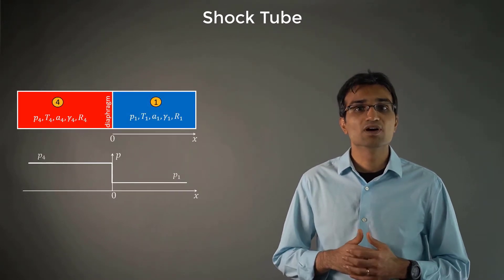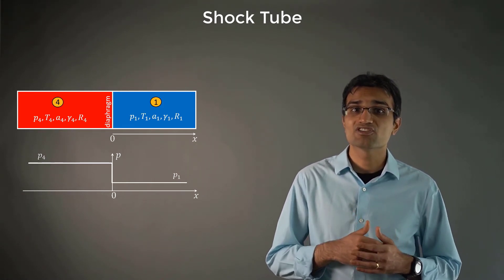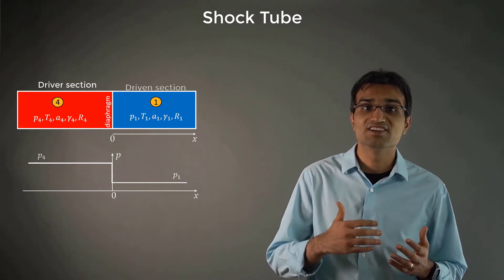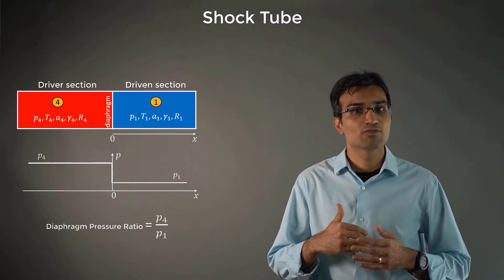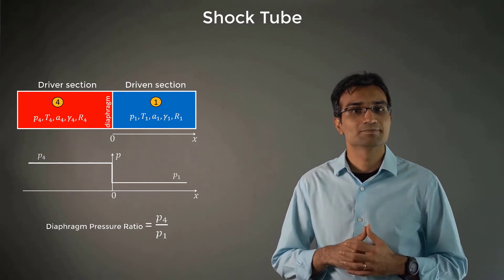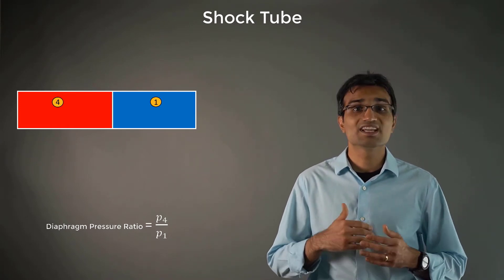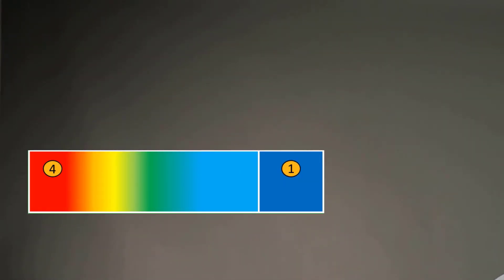Consider a one-dimensional tube which is closed at both ends, having a diaphragm separating regions of high pressure, also known as the driver section, and low pressure, also referred to as the driven section. The diaphragm pressure ratio is defined as the ratio of pressures P4 by P1. At T equals 0, the diaphragm is suddenly removed, initiating transient dynamics of gases in the tube. The initial jump in pressure splits into the shock propagating into the driven section and the expansion wave propagating into the driver section.